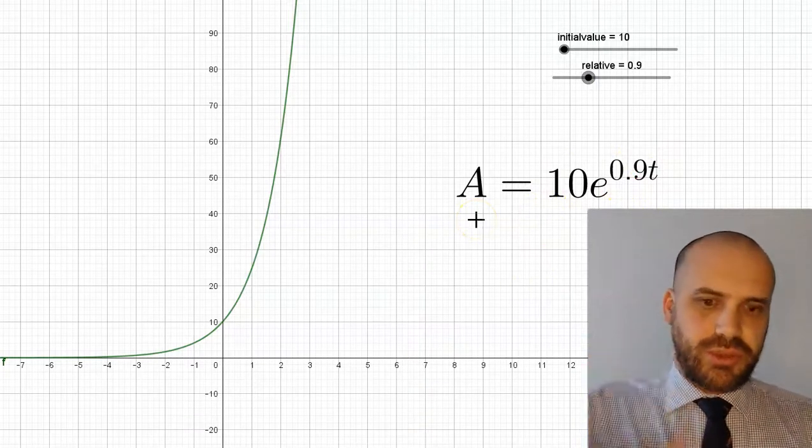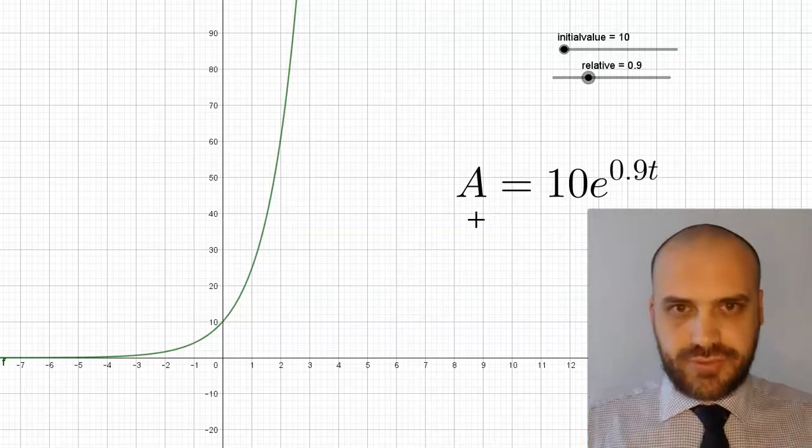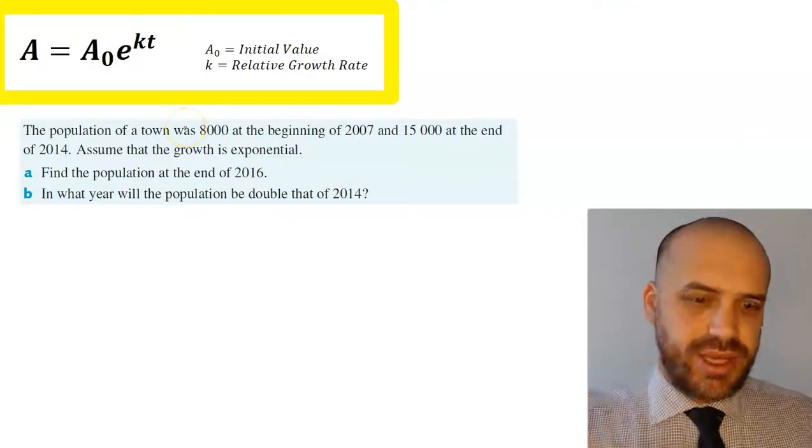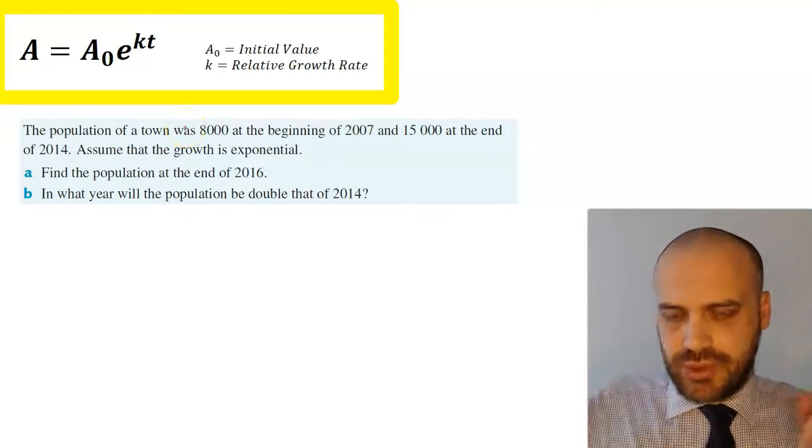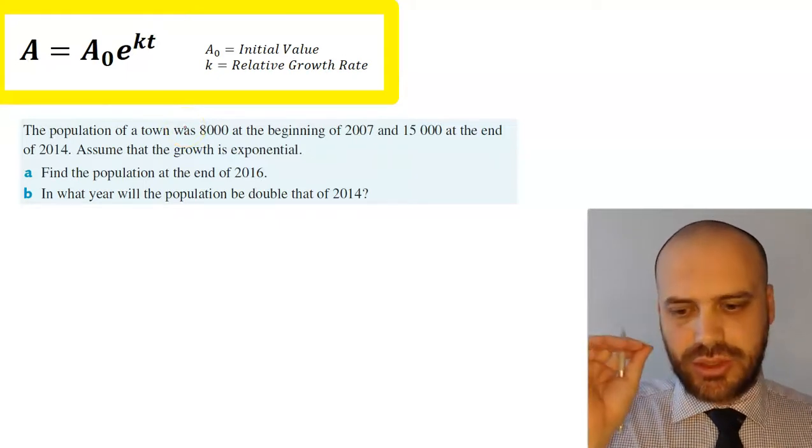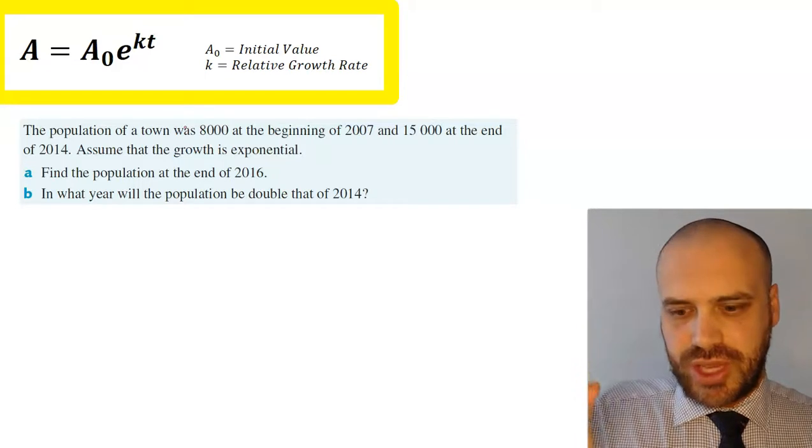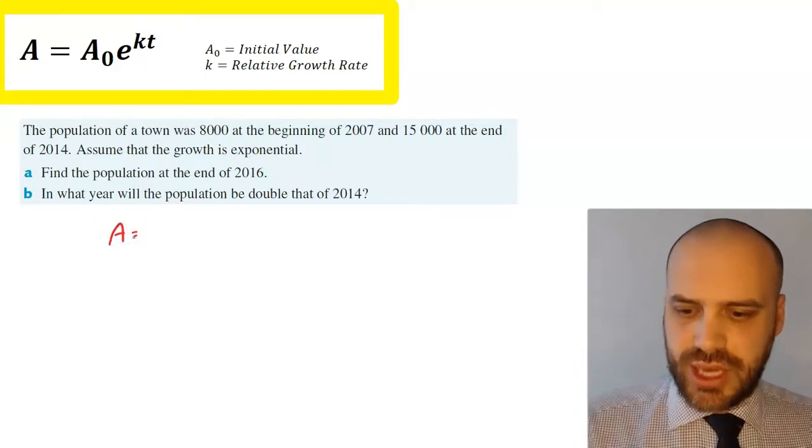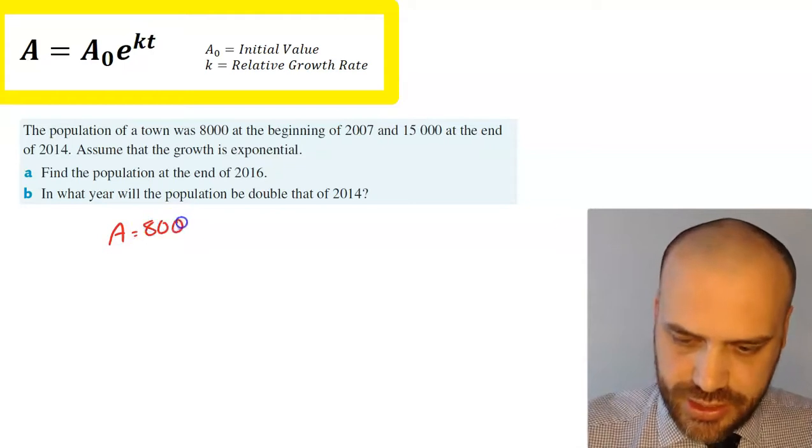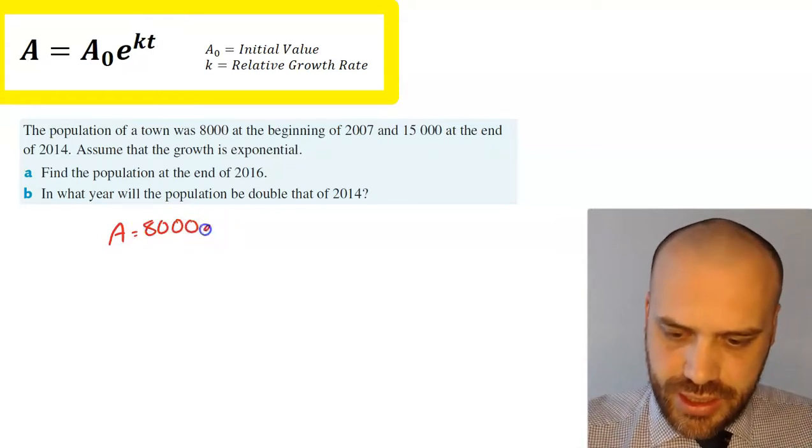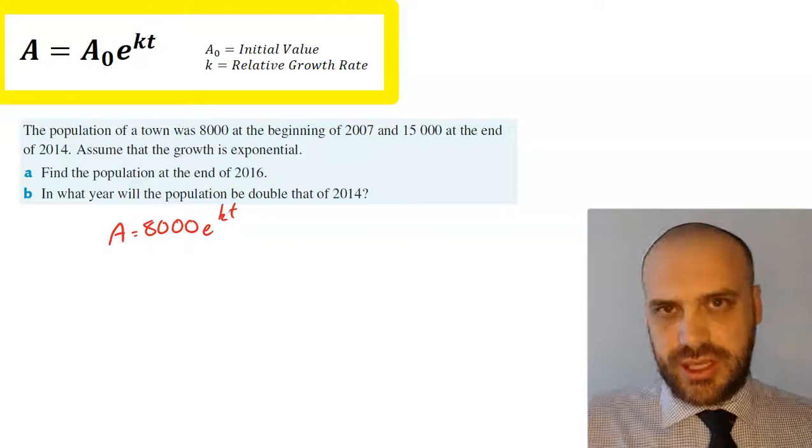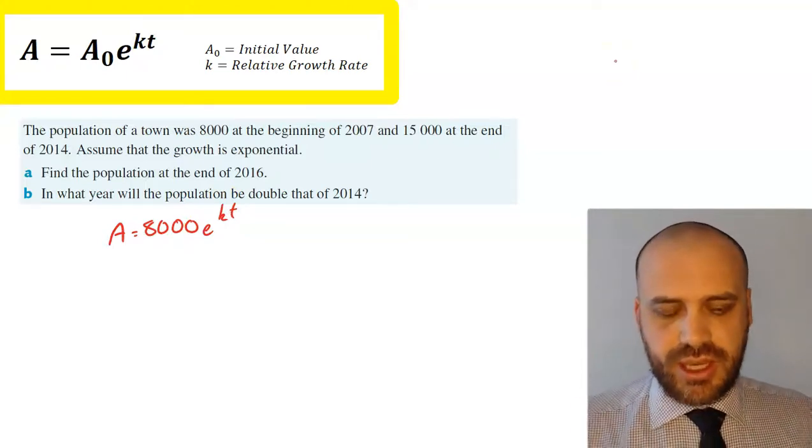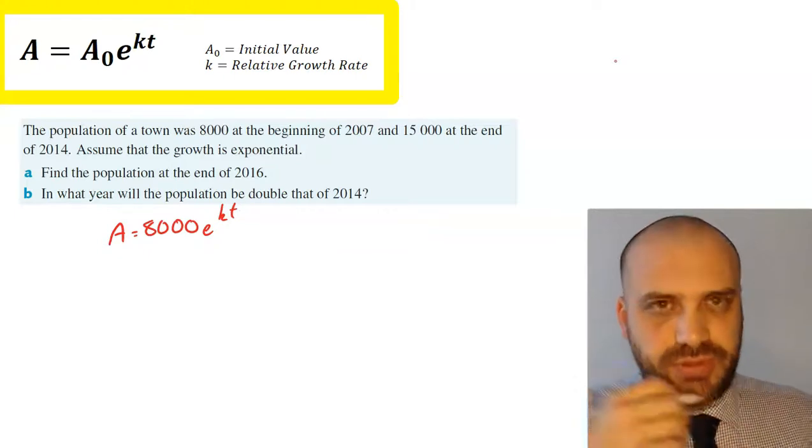Now if we're given enough information, we can develop these models ourselves. This is a pretty standard sort of question. The population of a town was 8,000 at the beginning of 2007, so that's our initial value, our initial population. So we can say with certainty that we've got A = 8000e^(kt). Now to have a complete model, we need to know what that k value is, and that's where we can take the next piece of information here.